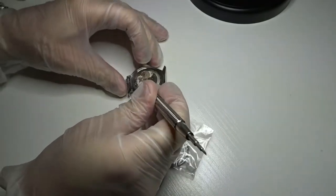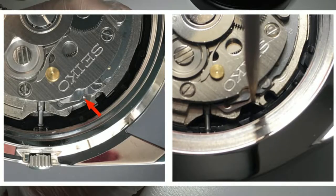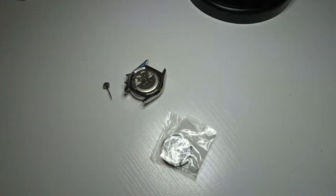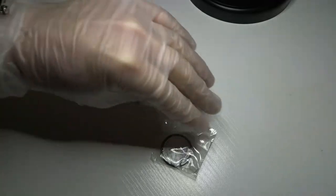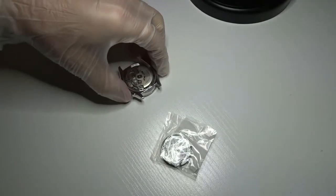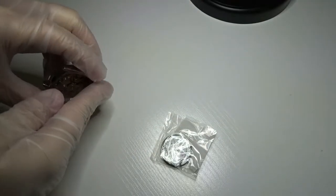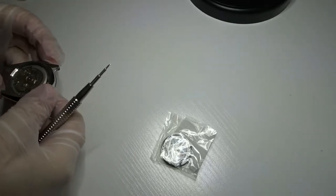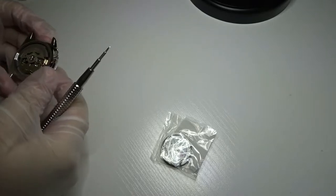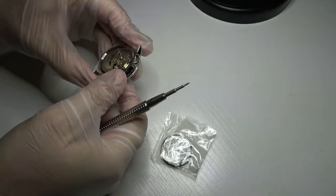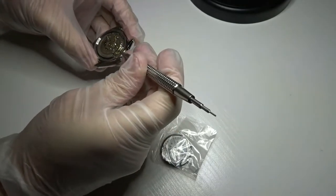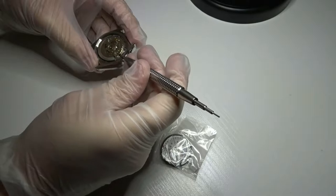So I removed the case back on the watch and there's a little area that you press down on and that'll let you remove the stem and crown. Obviously we need to take that out before we can get the old movement out of the case. Sometimes it just falls out, but in this case I'm just going to use the spring bar removal tool to gently pry up a little bit and that'll allow the movement to fall out.